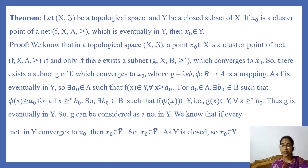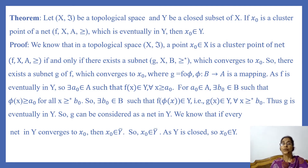We know that in a topological space (X, T), a point x₀ is a cluster point of a net f(x), (a, ≥), if and only if there exists a subnet g(x), (b, ≥*), which converges to x₀. We proved this in the last lecture. So there exists a subnet g of f converging to x₀, where g = f ∘ φ and φ is a mapping from directed set B to A.